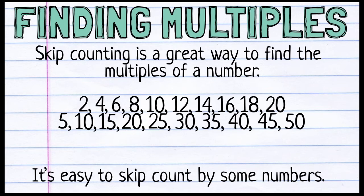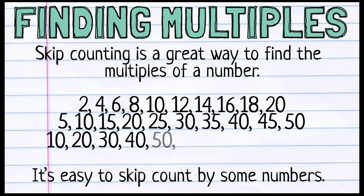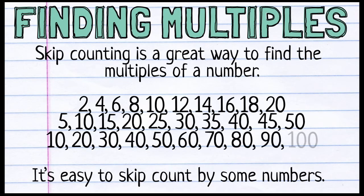When you are skip counting by a number, you're listing the multiples of that number. 10 is another easy one. 10, 20, 30, 40, 50, 60, 70, 80, 90, 100. I could keep going. 110, 120, 130. These are multiples.